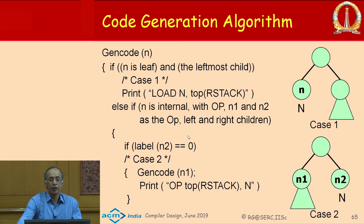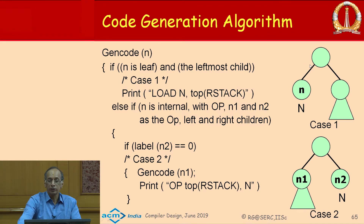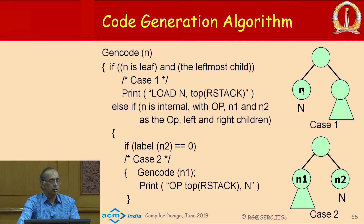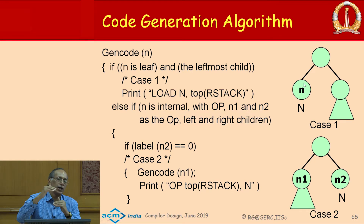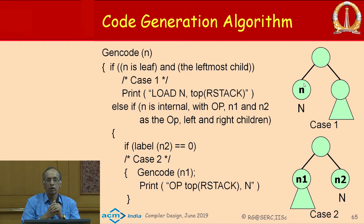The code generation algorithm has five cases. Case 1: the node is a leaf node and is the left child. Since the left operand must be in a register, we need to move the value into a register. After generating code for this, the R stack must be in the same form and the top of the stack must hold the computed value.